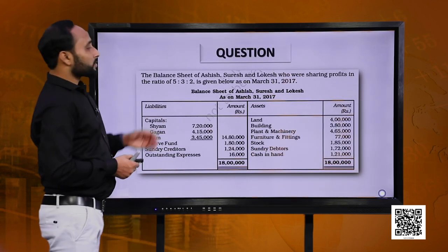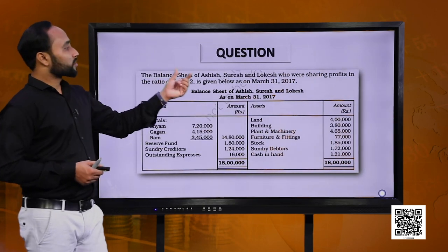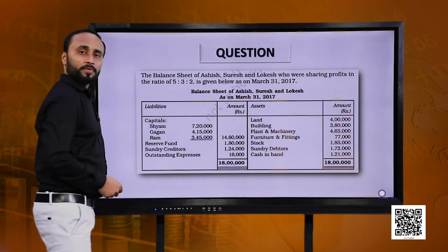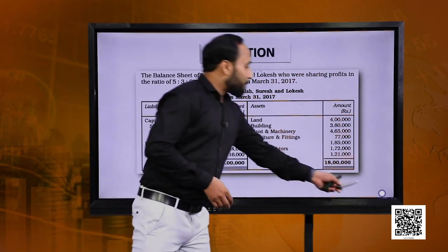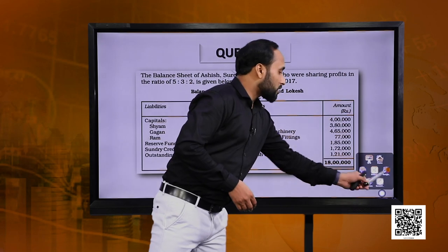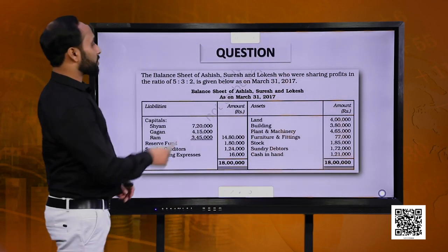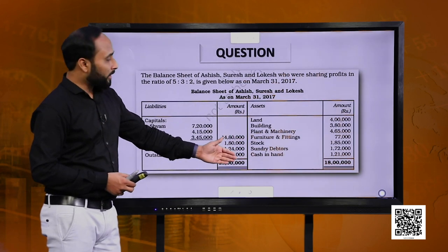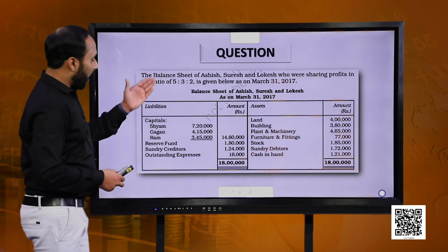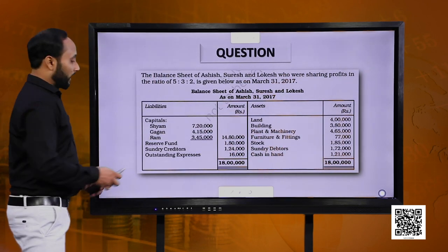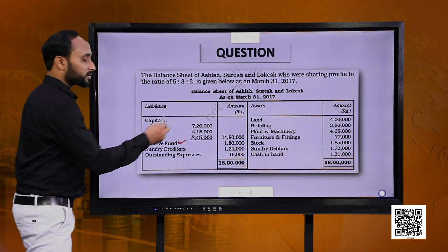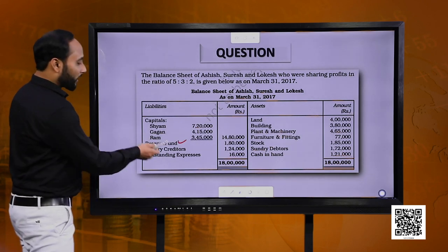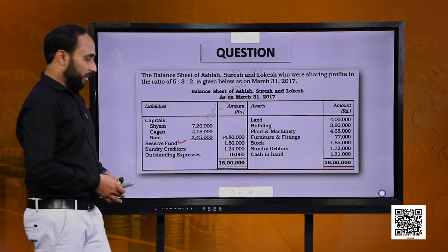In our question, we have Ashish, Suresh and Lokesh whose profit sharing ratio is 5:3:2. Their balance sheet on 31st March 2017 is given to us. In the balance sheet we have these assets and liabilities. We have a reserve fund — remember, reserves are to be written off unless otherwise stated — and then we have sundry creditors and outstanding expenses.